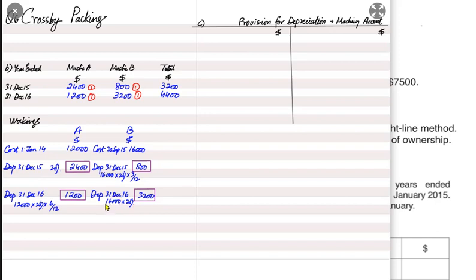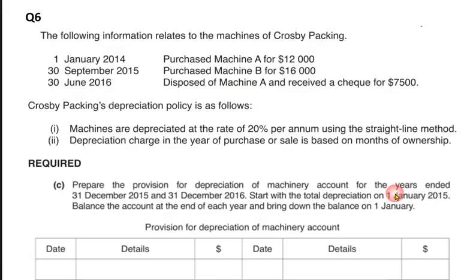In 2016, Machine B was not being sold, so it is used for the entire year. We charge 16,000 × 20% = 3,200 depreciation for Machine B in 2016.